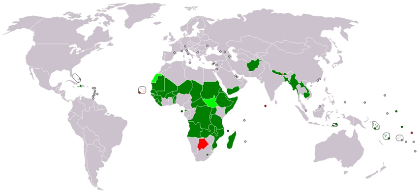A nation's GDP per capita compared with other nations can also be a reference point. The term 'developing' describes a currently observed situation and not a changing dynamic or expected direction of progress. Since the late 1990s, developing countries tended to demonstrate higher growth rates than developed countries.